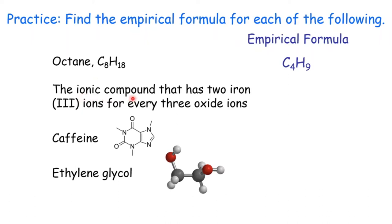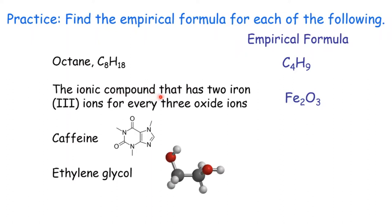Second one: the ionic compound that has two iron(III) ions — that's three positive charges — for every three oxide ions (O2−). Each iron ion is 3+; 3+ times 2 gives positive 6. Each oxide carries negative 2; negative 2 times 3 gives negative 6. Positive 6 plus negative 6 means the overall charge is 0. Remember: for all ionic compounds, their formulas are always empirical formulas — they are already in the simplest whole number ratio.